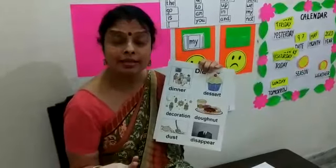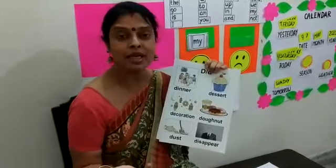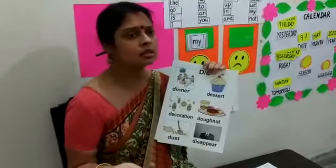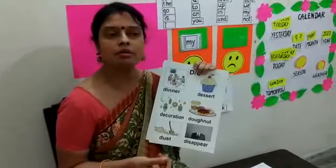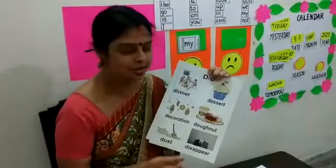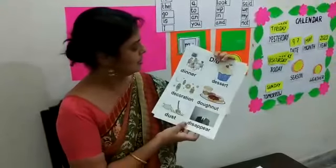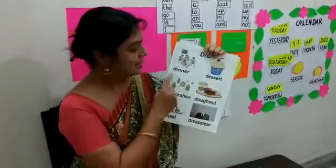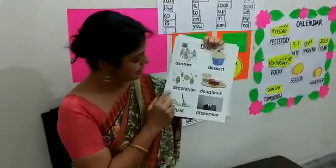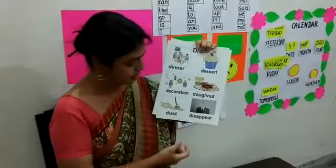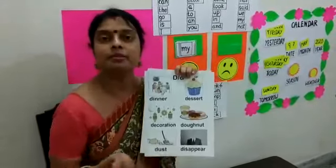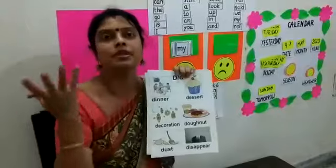Kheer — mama makes yummy kheer. Pudding. Rasgulla. Gulab jamun. Raddoos. Dinner — we have at night. Decoration. Dust. And disappear — have you seen a magician? He does magic shows and so many things disappear. In Detective Dog and the Disappearing Donut, the donuts disappeared from his gate.